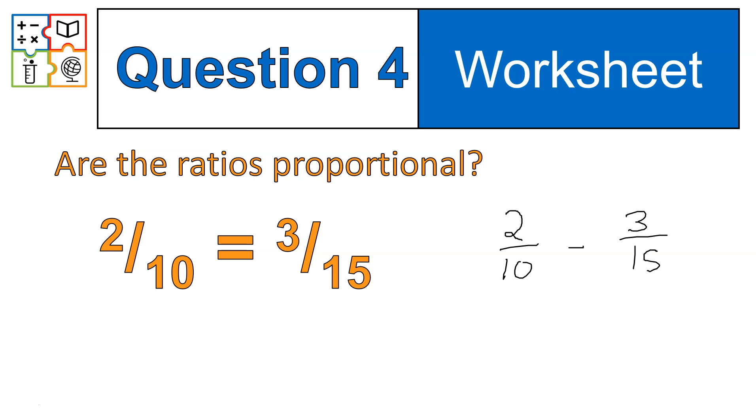And my question is, are they equal? Or are they equivalent? All right? I don't know yet. So I'm going to do some multiplying. 10 times 3, and that gives me 30. And then I've got 15 times 2, and that gives me 30. Because my products, 30 and 30, are equivalent or equal to each other, therefore these ratios are proportional. So I could say, yeah, they are proportional.